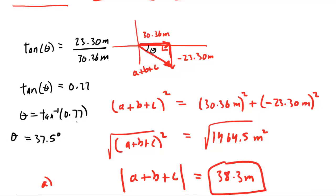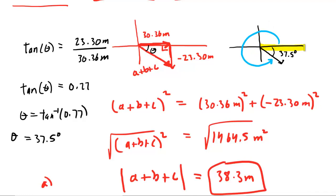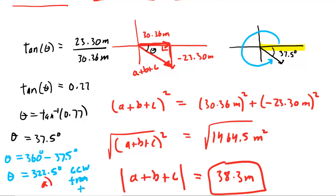But let's be careful about how we report this angle. It's very possible that your homework system wants you to report the angle relative to the positive x-axis. This angle here is 37.5 degrees, but what your homework system might really want is the angle measured counterclockwise from the positive x-axis. That blue angle would just be 360 minus 37.5. So we take 360 and subtract 37.5 degrees, and we get approximately 322.5 degrees. That is the correct answer to part B.